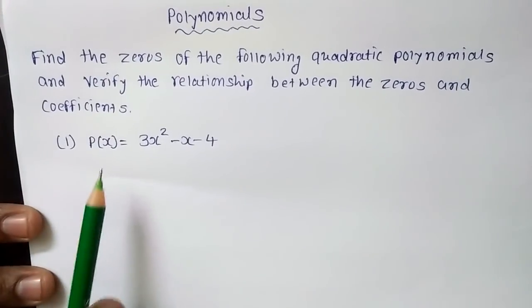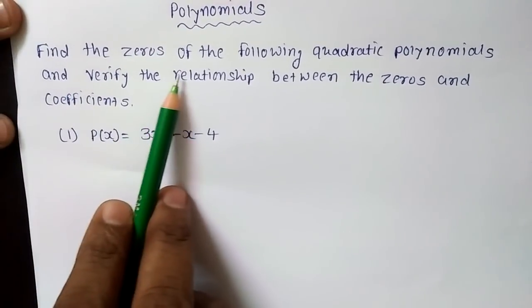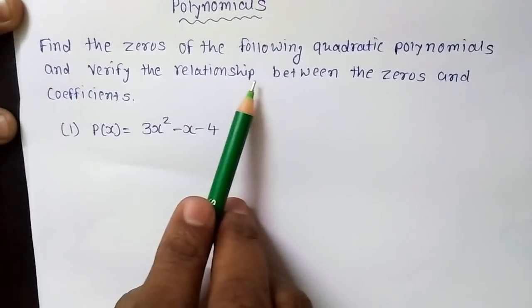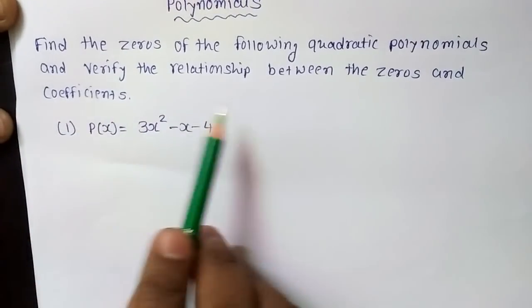Hello friends. We will continue our journey in the polynomial chapter, which is one of the important chapters of standard 10 mathematics. In this video, we will try to find out the zeros of the polynomial — the solution set of the given quadratic polynomial — as well as verify the relationship between the zeros and the coefficients. Let us begin. Find the zeros of the following quadratic polynomial and verify the relationship between the zeros and coefficients.